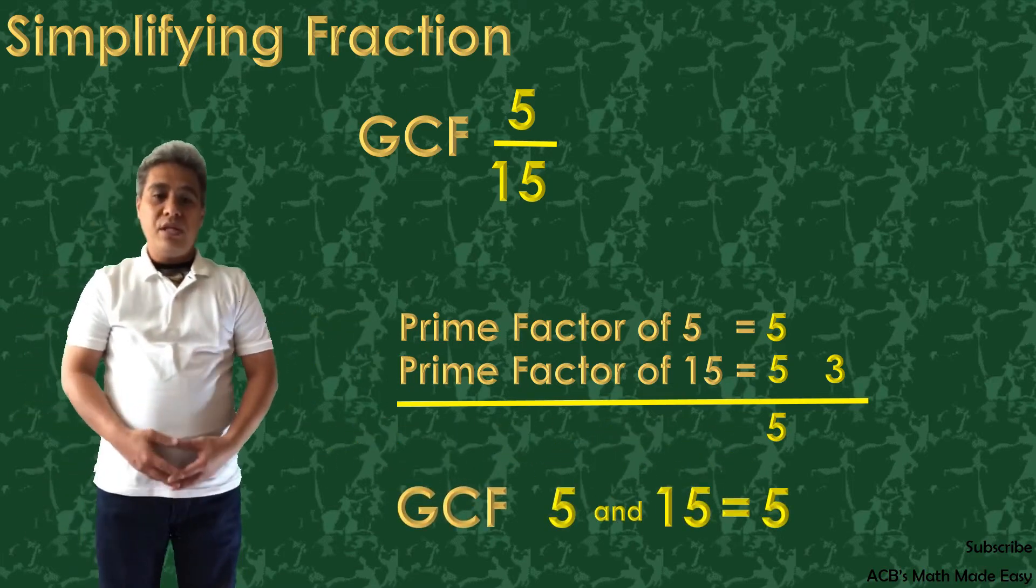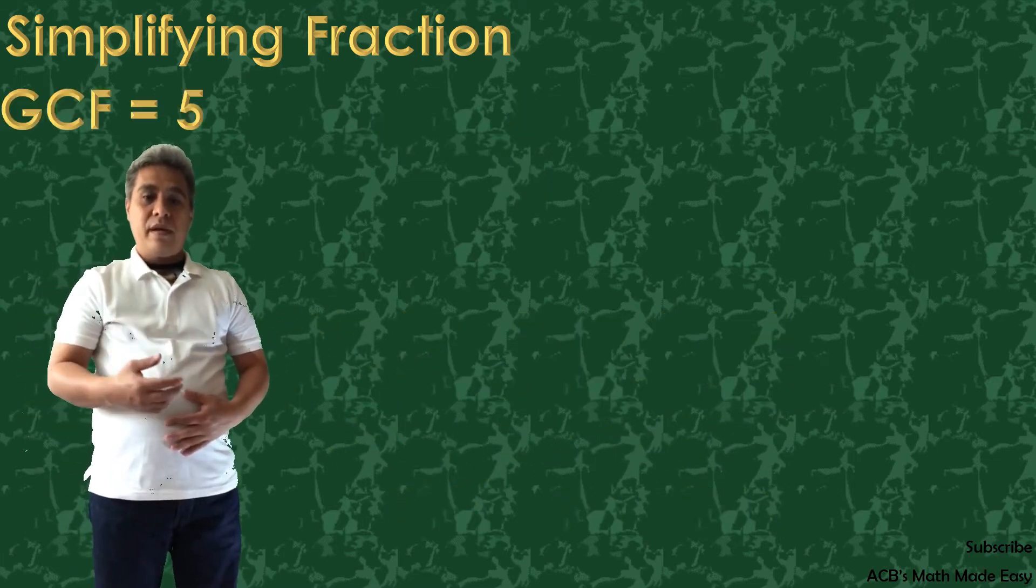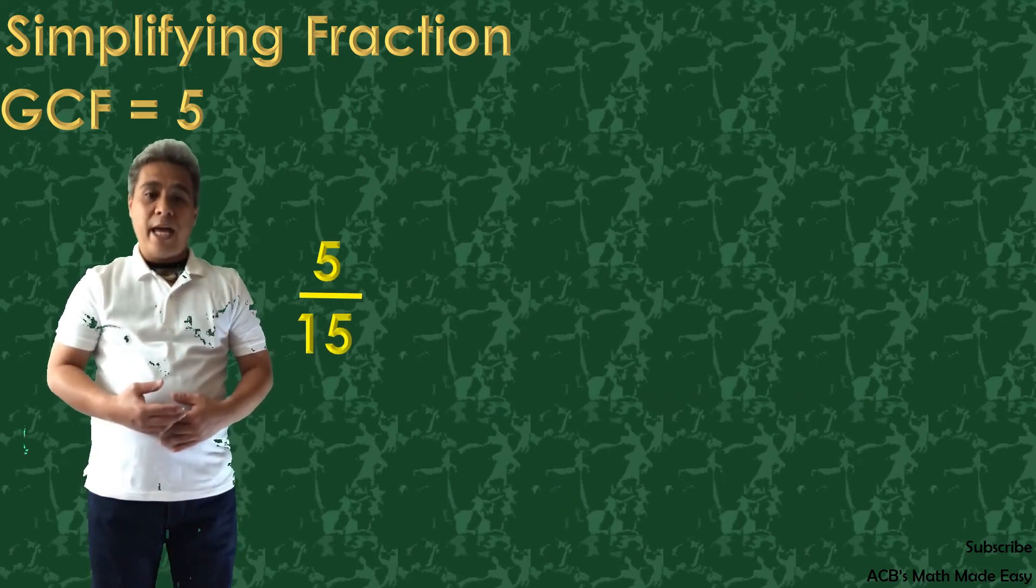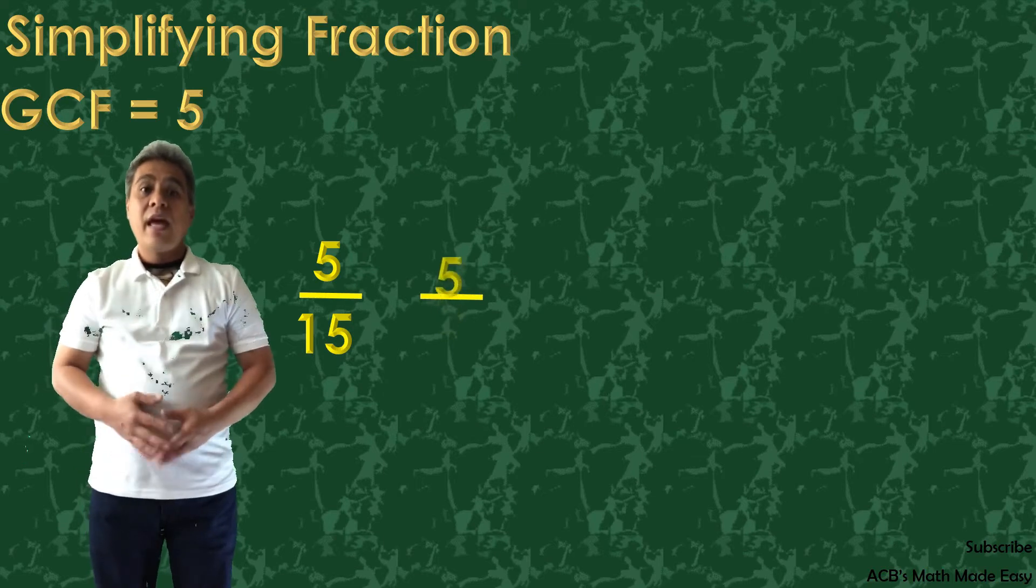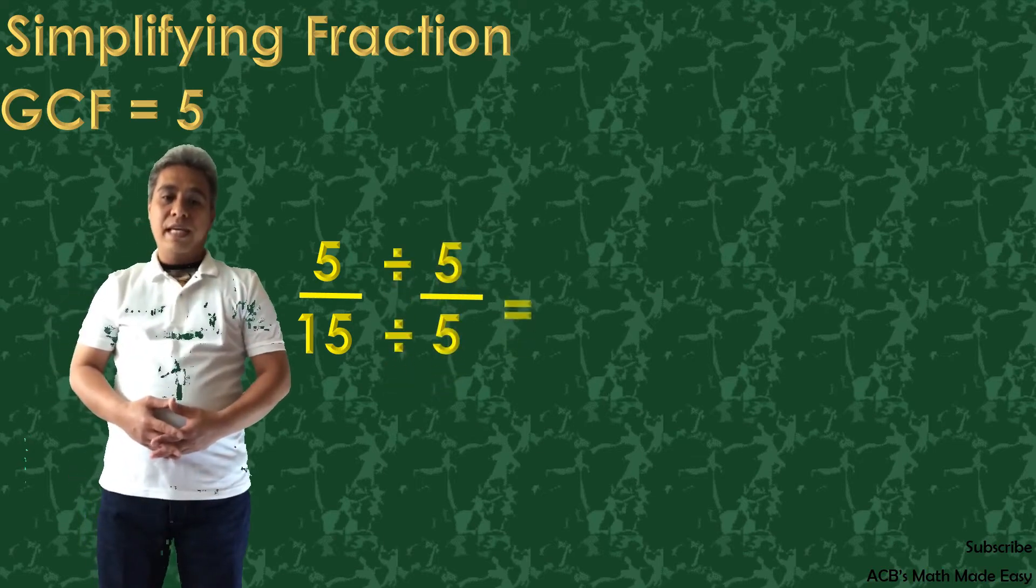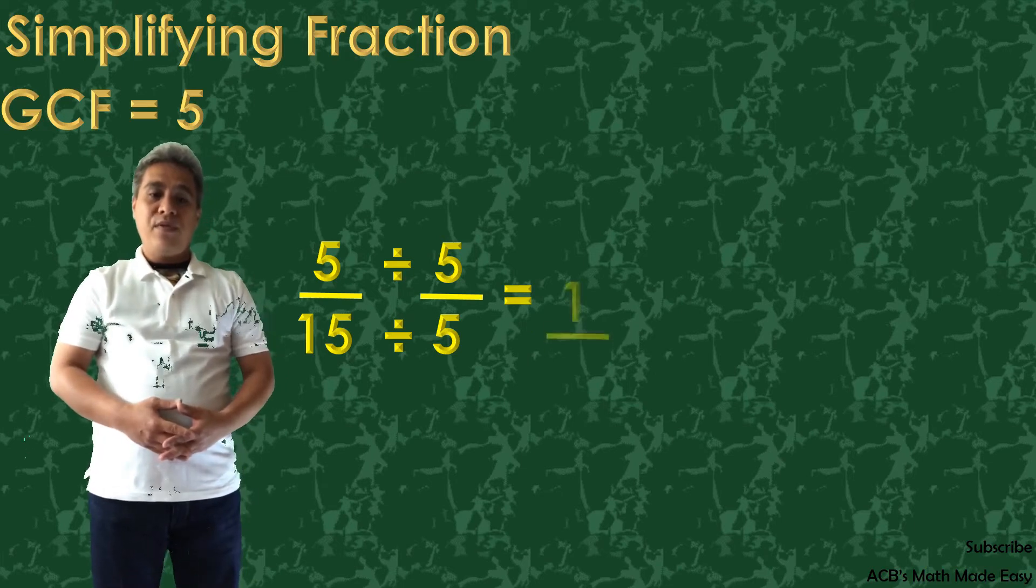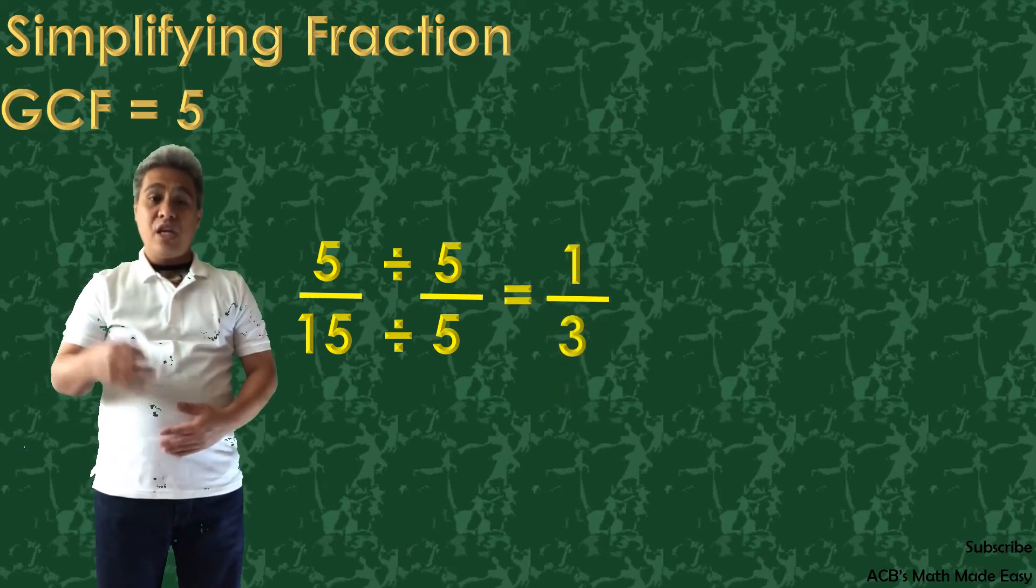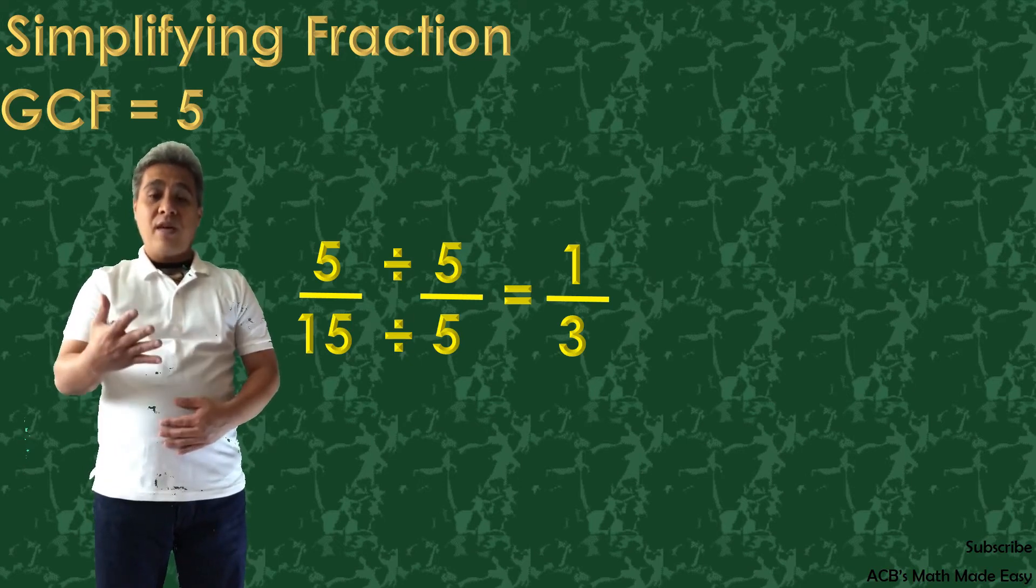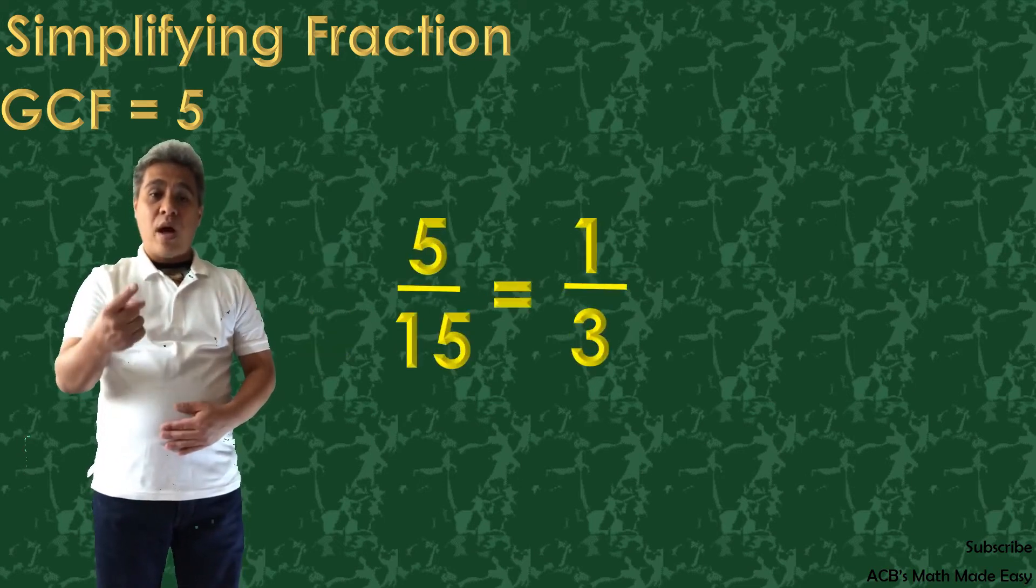Now that we have the GCF of 5, the next step is to make 5 as the numerator and denominator and divide them. 5 divided by 5 is equal to 1 and 15 divided by 5 is equal to 3. So, we just simplified 5 over 15 to 1/3.